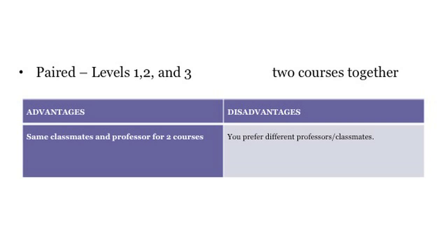The second kind we call paired. Paired courses means you have to take two courses together — you cannot separate them. The disadvantage might be that you prefer to have different teachers and different teaching styles. The advantage is that you have one teacher for two classes and the same classmates for two classes, which is a little less confusing.